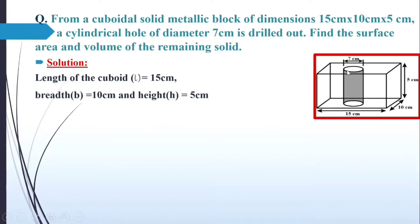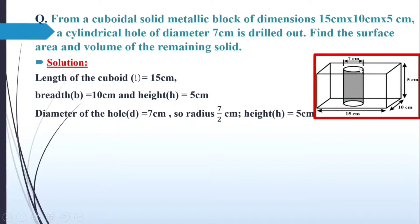This cylindrical hole has been drilled out, which means its top and bottom are open. So the height of this cylinder will be equal to the height of the cuboid — that means the cylindrical hole will also have height equal to 5 cm. Its diameter has been given as 7 cm, so the radius is 7/2 and the height is 5 cm.